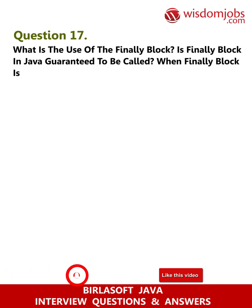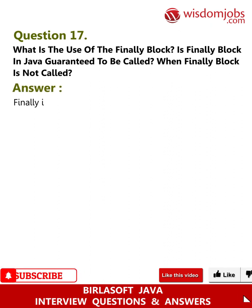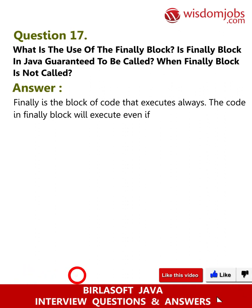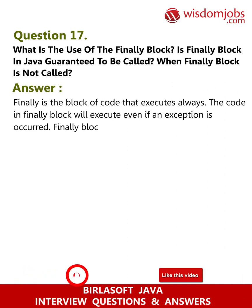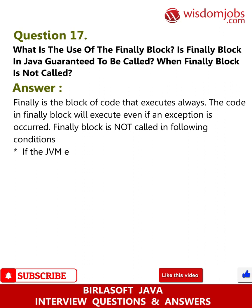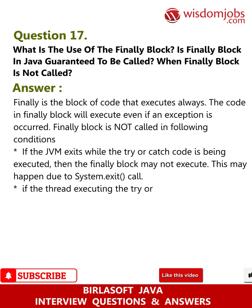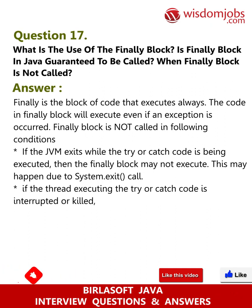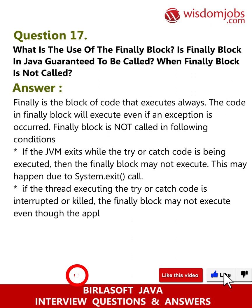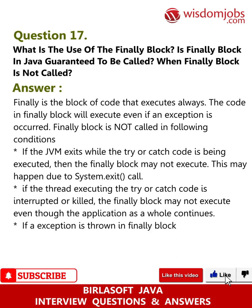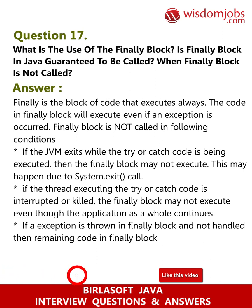Question 17: What is the use of the finally block? When is the finally block not called? Answer: Finally is the block of code that executes always — the code in the finally block will execute even if an exception has occurred. The finally block is not called in the following conditions: if the JVM exits while the try or catch code is being executed (which may happen due to System.exit() call); if the thread executing the try or catch code is interrupted or killed; or if an exception is thrown in the finally block and not handled, then the remaining code in the finally block may not execute.